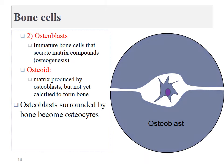Osteoblasts secrete the extracellular matrix, just like fibroblasts made the extracellular matrix in our generic connective tissues. This extracellular matrix starts off immature and later calcifies to turn into bone tissue. Once the osteoblast is completely surrounded by this dense extracellular matrix, it differentiates into an osteocyte — a cell capable of maintaining that tissue rather than secreting new tissue.